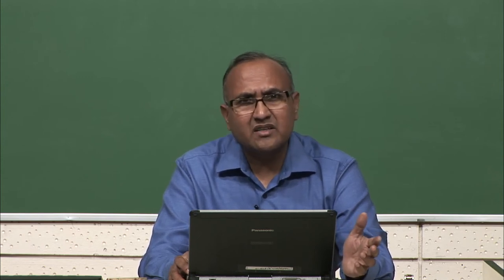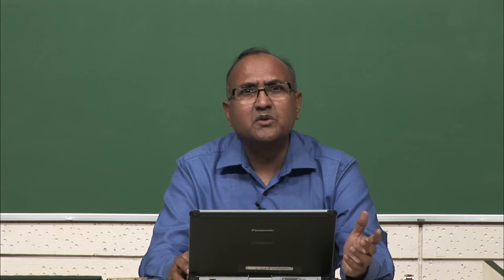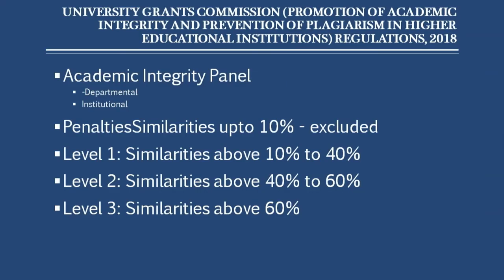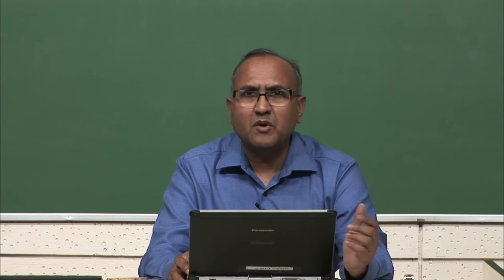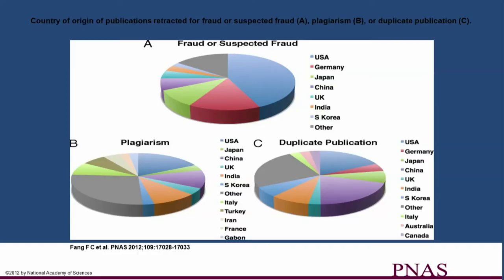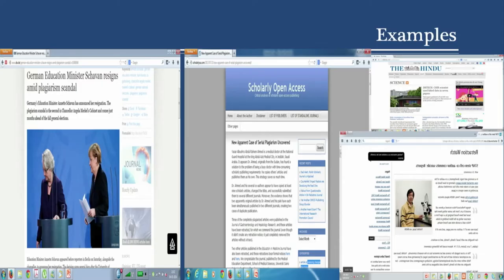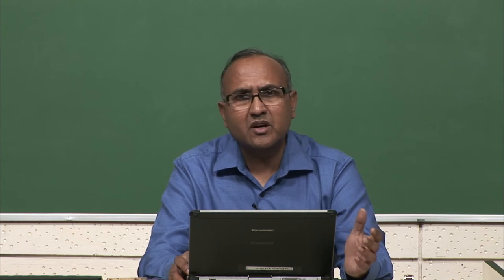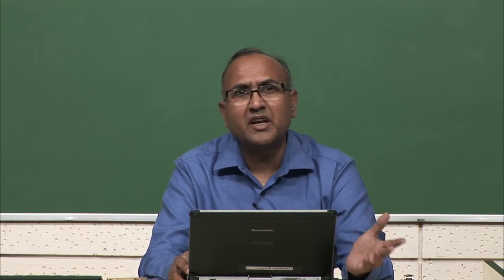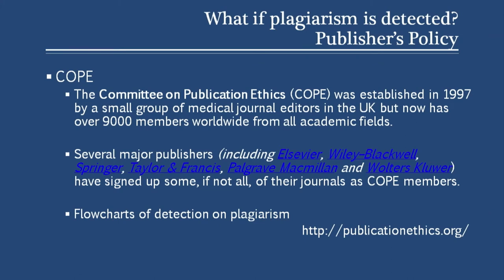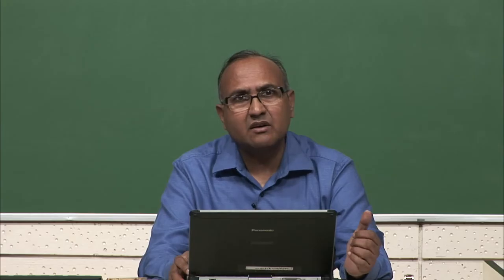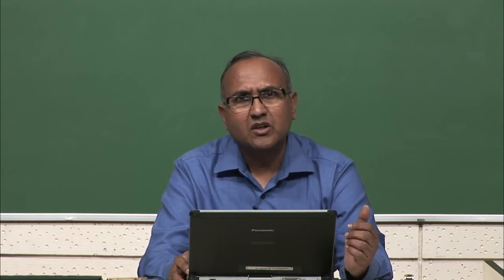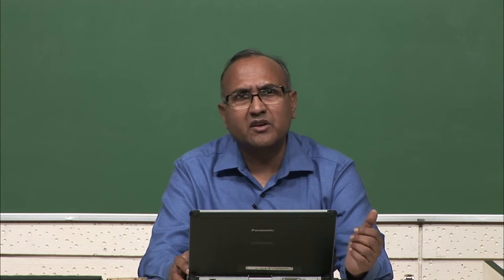Penalties exist for plagiarism — it is not just an ethical issue. With UGC Regulation 2018, penalties have been defined at level 1, level 2, and level 3; you can refer to the university plagiarism regulation 2018. This problem exists not only in countries like India or China — it is everywhere, even in the western world and Europe. Not just students, but ministers, researchers, and doctors have been found plagiarizing content. The Committee on Publication Ethics, established in 1997, is working to address these issues, though many times it is not enough.